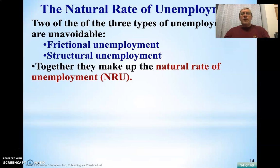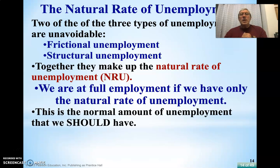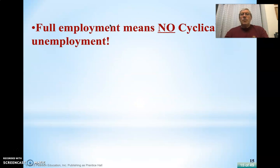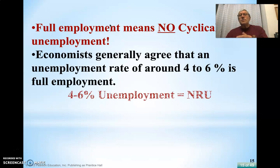The natural rate of unemployment — NRU — includes frictional and structural unemployment. We consider the United States to be at full employment if we only have the natural rate of unemployment. That's normal and it's what we should have — there will be no cyclical unemployment. An unemployment rate between 4 to 6 percent is really considered a perfect rate. We're doing well; we've got full employment.